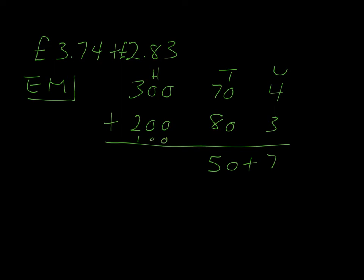That's 300 plus 200 plus 100 gives us 600. Now what I'm going to do is combine all of these, I add them all up and then I add my pound symbol and my decimal point to give me the final answer which will translate to 6 pound 57.